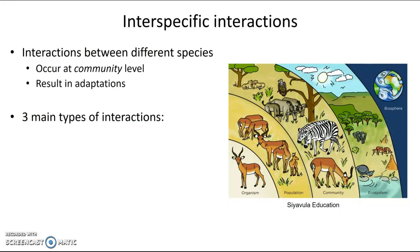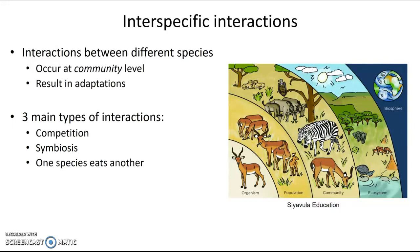There are three main types of interspecific interactions we're going to discuss: competition, symbiosis, and interactions in which one species eats another, which includes both predation and herbivory. We're going to classify each of these interactions using plus and minus to indicate whether the interaction is beneficial or harmful to each of the species involved.